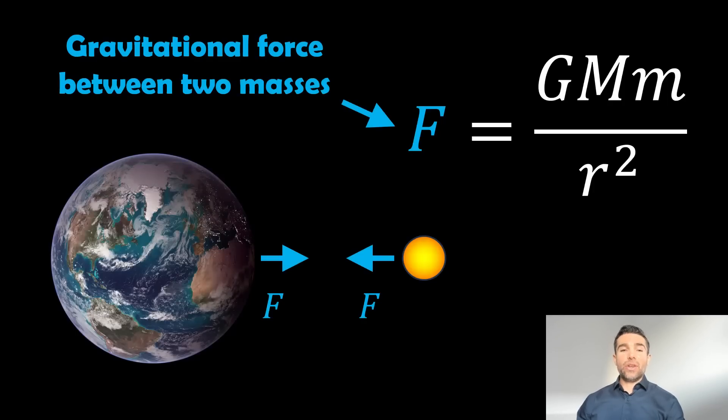I'm going to use the Earth as an example here and some smaller second object, which I haven't really defined what it is. Maybe it's the moon, maybe it's us standing on the surface. F is the gravitational force between these two masses, so we've got the Earth and then a smaller mass. F is our gravitational force acting between the two objects, which is the same acting on both objects but just in different directions.